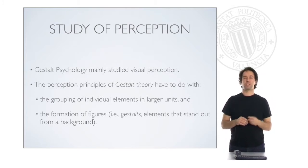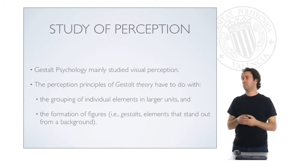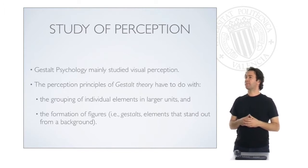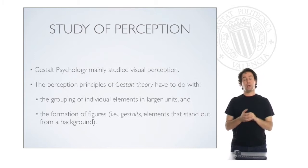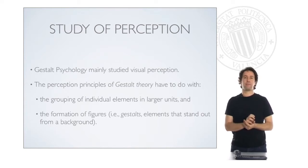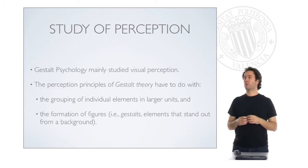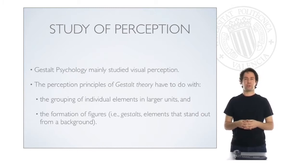Gestalt psychology was centered in particular on visual perception — they studied visual perception mostly. The perception principles of Gestalt theory are laws they developed and experimented with that try to explain how human perception processes information. All these perception principles have to do in particular with the grouping of individual elements into larger units.